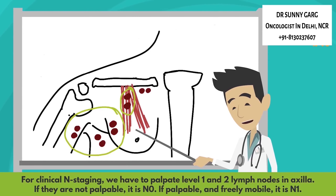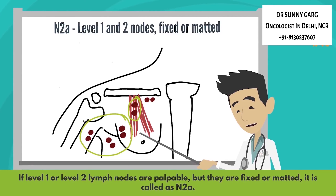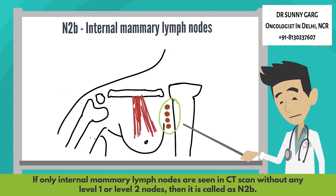For clinical N-staging, we have to palpate the level 1 and level 2 lymph nodes in the axilla. If they are not palpable, that is N0 stage. If they are palpable and freely mobile, it is called N1 stage. If level 1 or level 2 lymph nodes are palpable but fixed or matted, it is called N2A. If only internal mammary lymph nodes are seen on CT scan without any level 1 or level 2 lymph nodes, then it is called N2B.